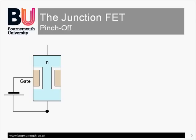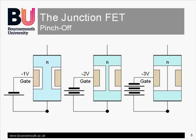Increasing the voltage on the gate will increase the size of the depletion layer. At some point — the pinch-off voltage, Vp, generally somewhere between minus 1 and minus 4 volts — the depletion layer will extend across the whole width of the channel.